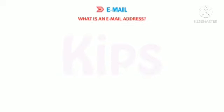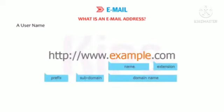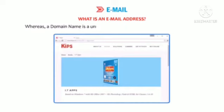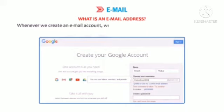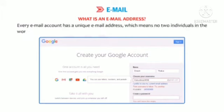An email address consists of a username and a domain name. A username is the name of a person's account by which the server identifies them on the website, whereas a domain name is a unique name that identifies a website on the web. Whenever we create an email account, we get an email address on which people send their mails. Every email account has a unique email address, meaning no two individuals in the world can have the same email address.